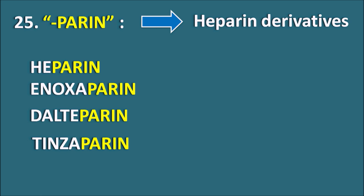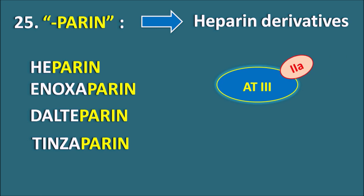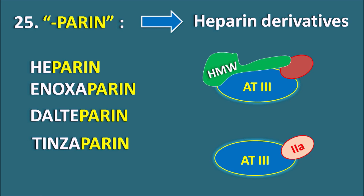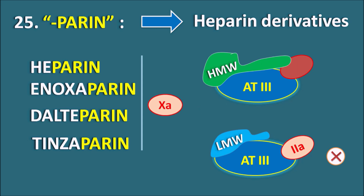All these drugs act as anticoagulants through antithrombin 3. Their target is antithrombin 3, which inhibits the activation of clotting factors. Antithrombin 3 binds to factor 2a to inhibit it, but to do this, heparin must bind to both antithrombin 3 and factor 2a. High molecular weight heparins can bind to both, thereby inhibiting factor 2a. Low molecular weight heparins can bind to antithrombin 3 but cannot bind to factor 2a due to their shorter polymer length, so they cannot inhibit factor 2a. This is an important difference between high and low molecular weight heparins. However, all heparins can inhibit factor 10a, which does not require heparin binding.